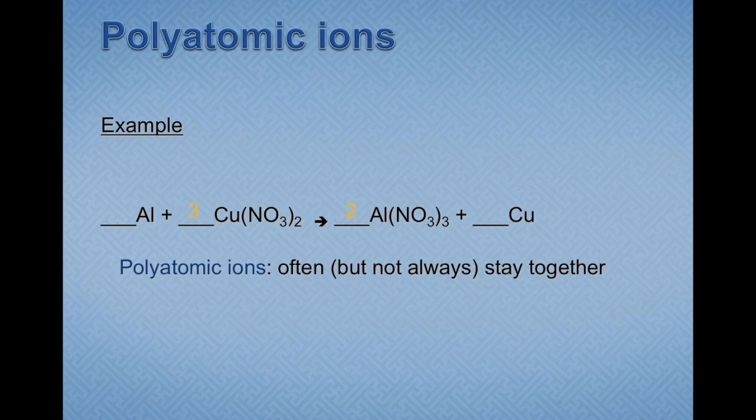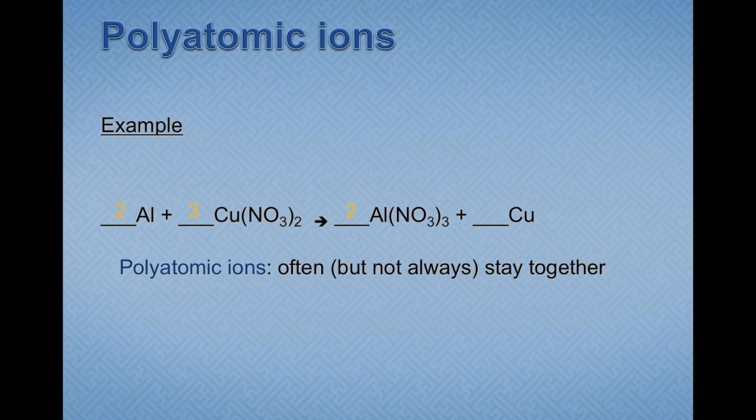Now that we have the nitrate balanced, we need to look at aluminum and copper. It doesn't matter which one you start with, so I'll start with aluminum. We have two aluminums on the product side in aluminum nitrate, so we're going to need two aluminum atoms on the reactant side. Then we look at copper — there's three in copper nitrate, so we're going to need three copper atoms on the product side.